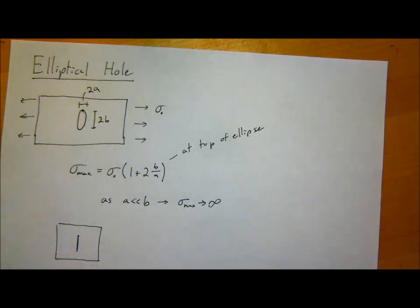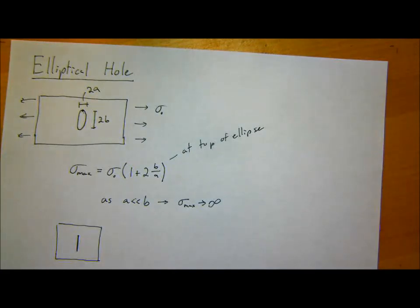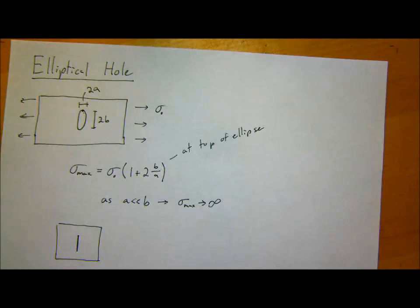That's probably a good point to stop at. Tomorrow we'll talk about digital image correlation — I'll go through some of the background and then discuss the DIC lab you'll be doing this week. Basically you'll be looking at a strip of rubber with a hole in it and examining these strain concentration maps around that hole.